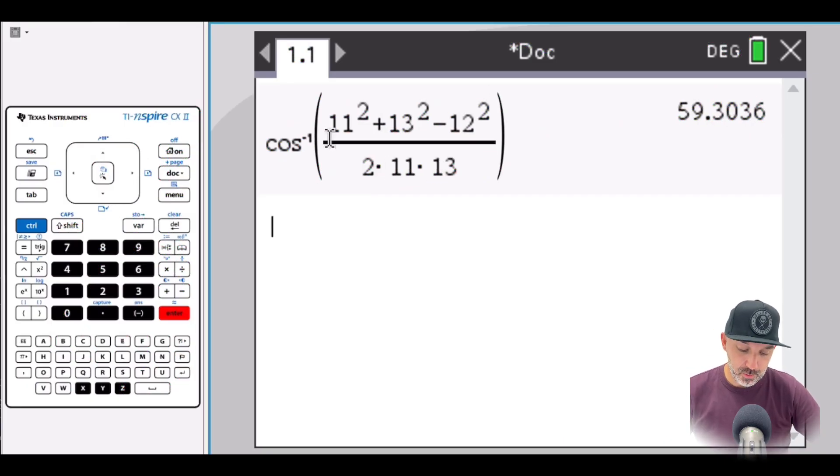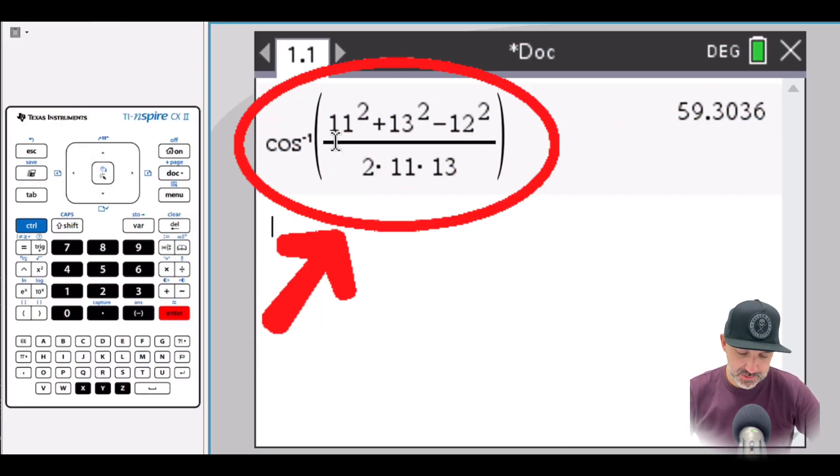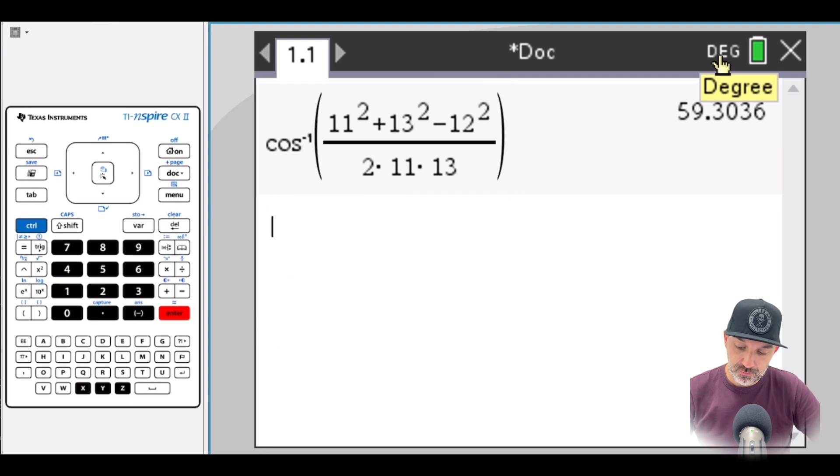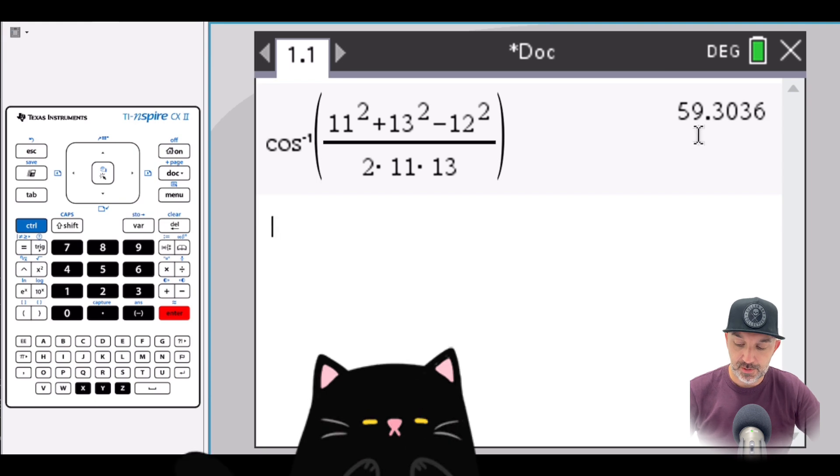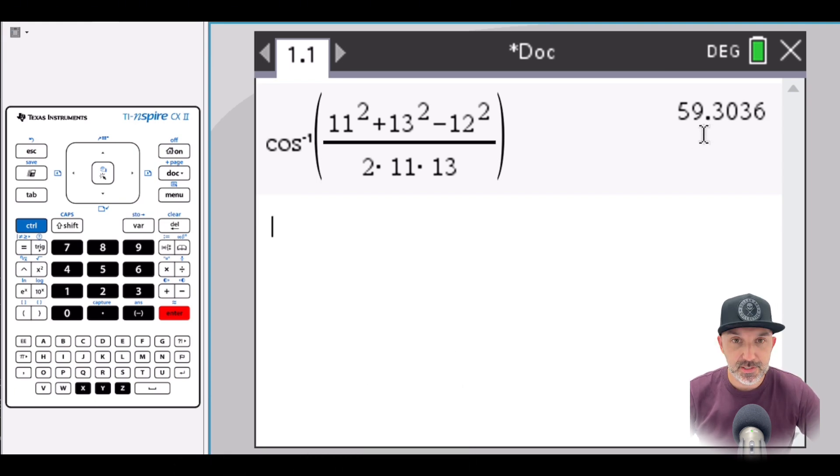I've just plugged all of those values into inverse cosine. Check that you're in degrees, remember. If the question's in radians, you'll need to work in radians. But I've just pressed enter, and our angle is 59.3, rounded to three significant figures.